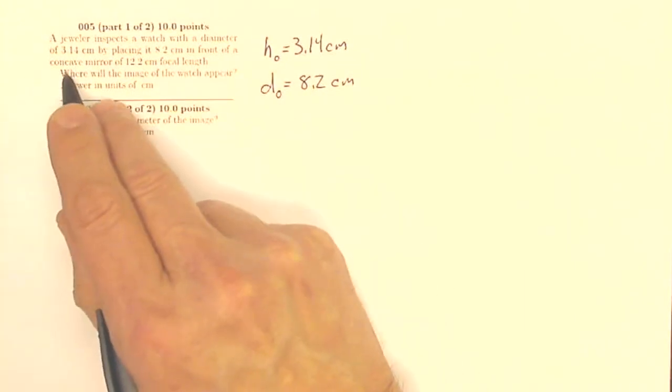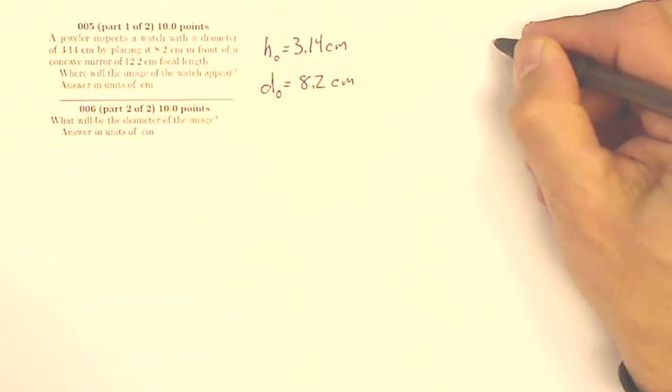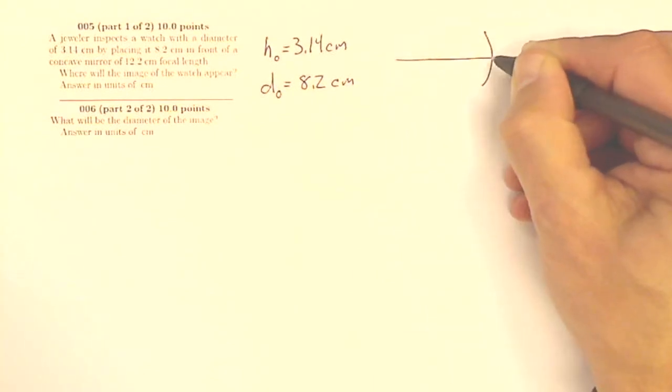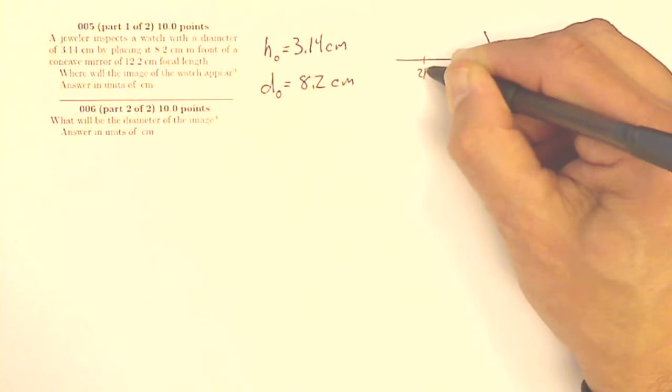In front of a concave mirror, concave mirror, so that's one of these. So I'm going to have a concave mirror, so I'll have an F, I'll have a 2F.